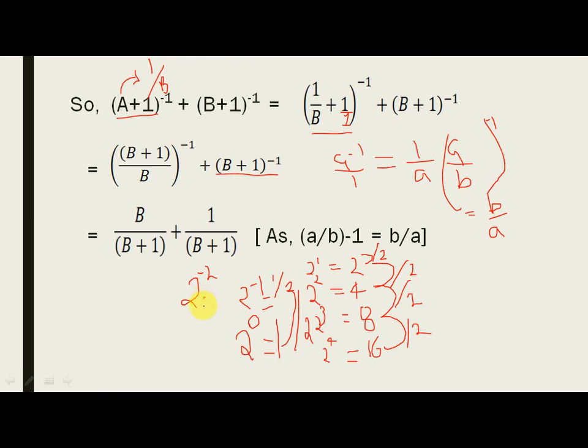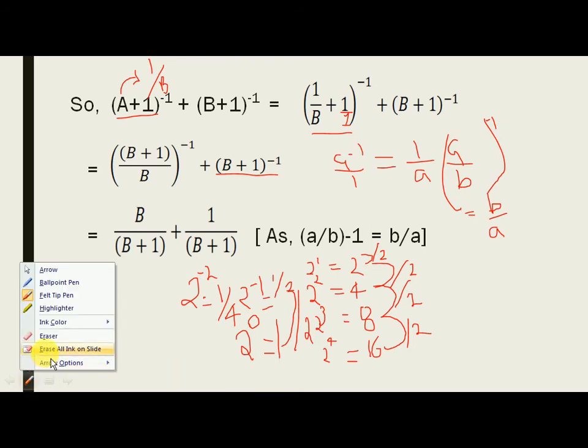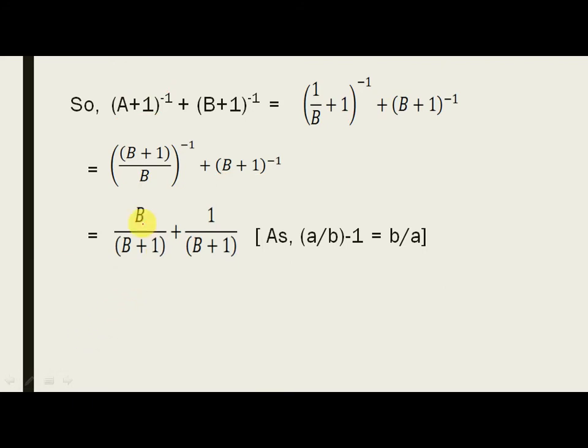Now, we know that A by B power minus 1 is equal to B by A.